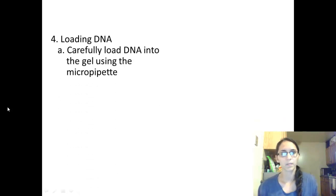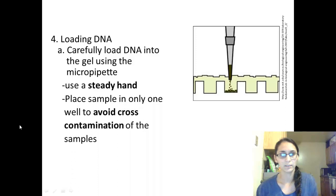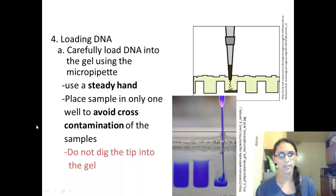Next, loading the DNA. You want to carefully load the DNA into the gel using a micropipette. Here's the cartoon image of a micropipette loading it into a little well. Use a steady hand, and place the sample only in one well to avoid cross-contamination of samples. You don't want DNA from this well to get into this well where you're going to place another sample. Here's a real-life image of a micropipette and the sample being placed into a well. You don't want to dig your tip deep into the well either.